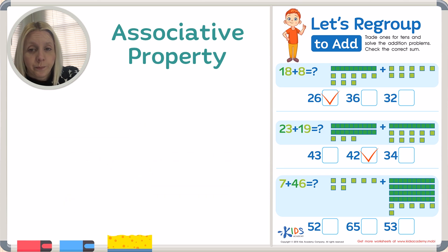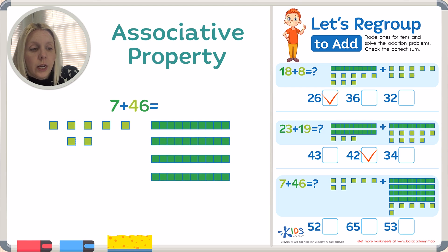Let's go on to the next one: 7 plus 46. I'm going to draw this out. We've got 1, 2, 3, 4, 5, 6, 7, then 46, which means 1, 2, 3, 4 columns of 10, and 6 individual units. I'm going to take 7 and count to 10: 7, 8, 9, 10.